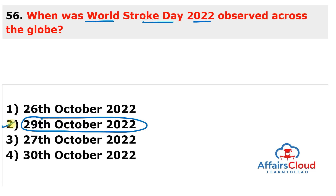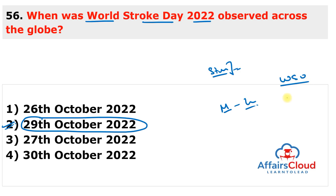Next question: when was World Stroke Day 2022 observed? The answer is 29th October 2022. World Stroke Day raises public awareness of the serious nature and high rates of strokes and preventive steps that can be taken. World Stroke Day 2022 builds on the momentum of last year's 'Minutes Can Save Lives' campaign. World Stroke Day was established by the World Stroke Organization at the World Stroke Congress held in Vancouver, Canada on 29th October 2004, and the first World Stroke Day was observed in 2006.